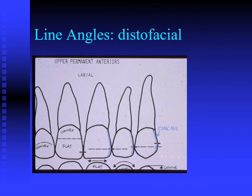This slide indicates the distal facial line angles on the anterior teeth. The distal facial line angles separate the distal surface from the facial surface; they are more distinct toward the incisal edges and more rounded cervically. You'll also note differences in shape: the distal of the cuspid below the interproximal contact area is concave, whereas on the lateral incisor that corresponding area is convex. Pay attention to convexities and concavities illustrated in the various views.